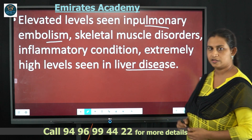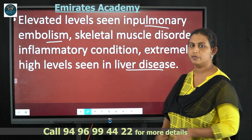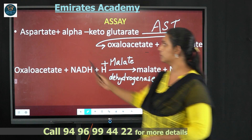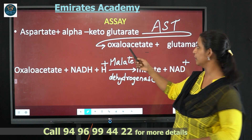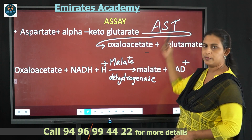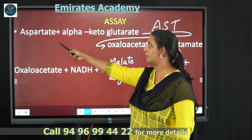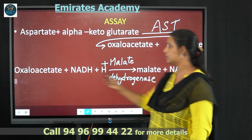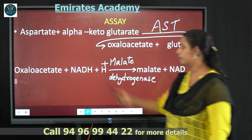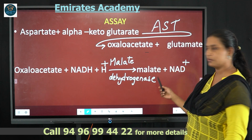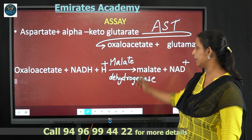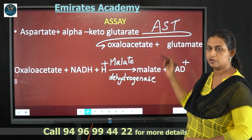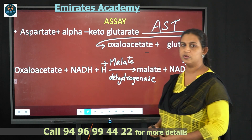Levels are extremely high in liver disease and other inflammatory conditions. The assay for aspartate aminotransferase involves an enzymatic reaction in which aspartate reacts with alpha-ketoglutarate to form oxaloacetate and glutamate. This oxaloacetate then undergoes reduction with oxidation of NADH, forming malate in a reaction catalyzed by malate dehydrogenase.